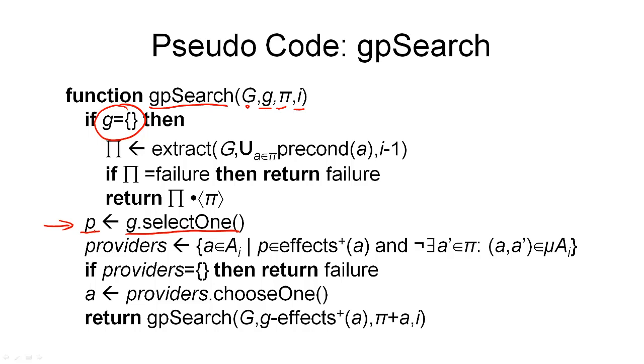And then, the next step is, we use the positive effect links to choose a provider for this proposition. And a provider must be, as I just said, a positive effect. But it also cannot be mutually exclusive with an action that we've already chosen in our set pi. So this says, there must not exist an action a prime in our set pi, such that a and a prime are mutually exclusive in action layer ai.